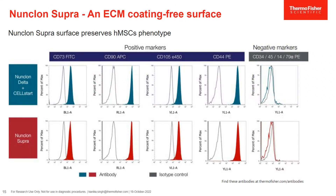In the next experiment, we wanted to check the expression of surface markers on cells taken from the Supra surface versus the Delta surface coated with ECM. The expression of CD73, CD90, CD105, and CD44 was similar in both cases. Basically, this experiment proved that when the cells are grown on Supra surface, the expression of the surface markers remains unchanged. The data shown here is from BMMSCs, but we have done the same experiment for ADSCs and WJ MSCs and the results were similar.